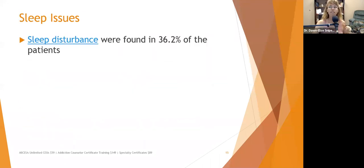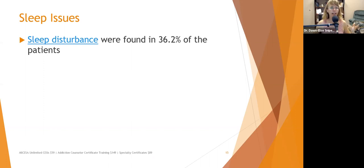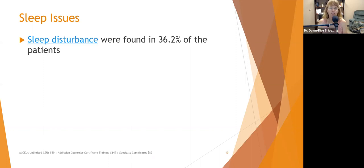Sleep disturbances were found in 36% of patients with chronic kidney disease — partly due to pain, needing to urinate more at night, and insufficient melatonin. Sleep disturbance and inadequate sleep quality contribute to depression and cognitive decline, so this is an important area to intervene on.